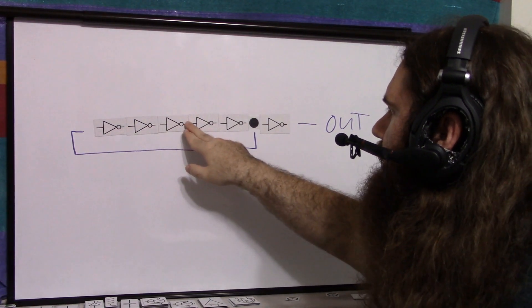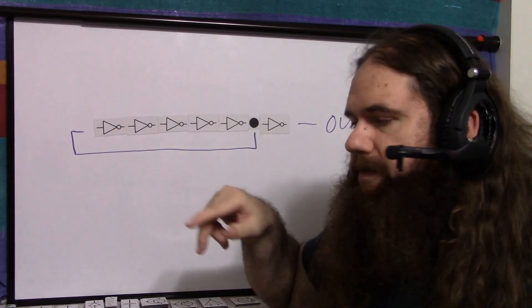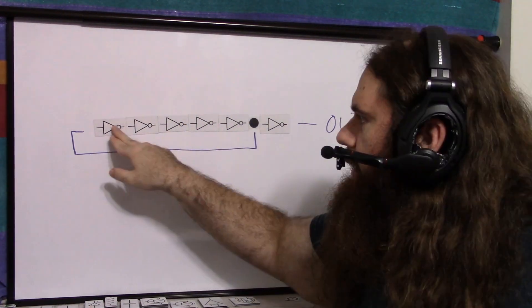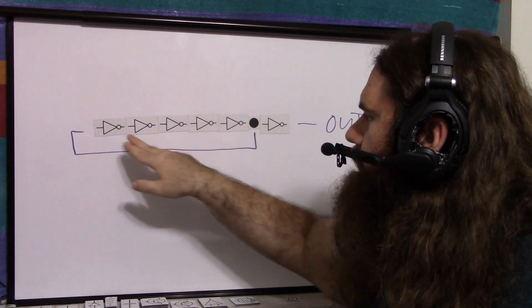So we get a high, it makes a low, it makes a high, it makes a low, makes a high, it makes a low, comes back around, and it keeps switching. And you add the propagation delay every time.